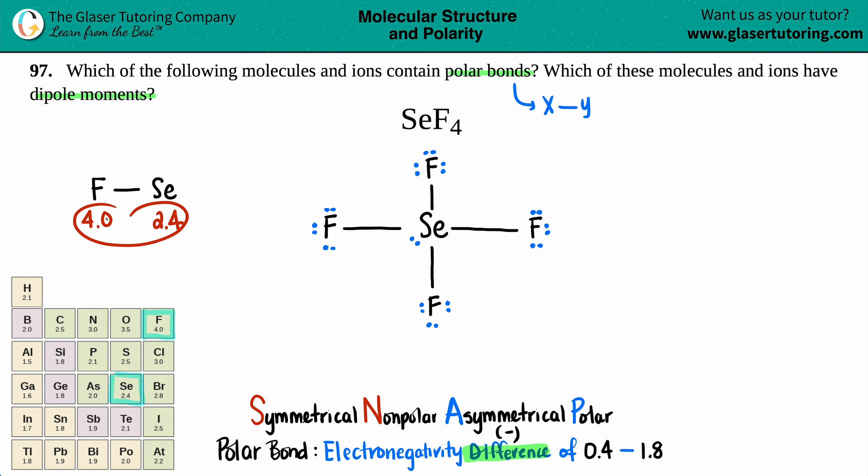Just know that when you are taking the difference between them, always take the higher number minus the lower number, because electronegativity difference can never be negative. So if you do get a negative, just take the absolute value. So when we do subtract 4.0 minus 2.4, I think we get 1.6. And it just makes it. It's still in the realm of being a polar bond. We're all the way at the tail end.